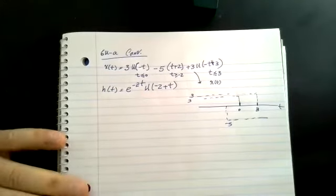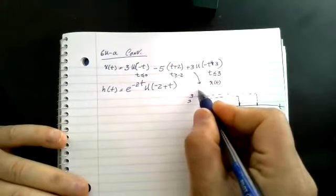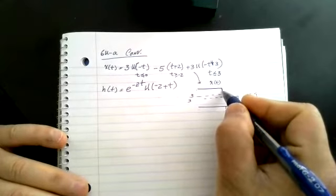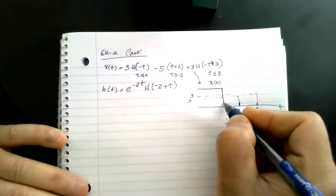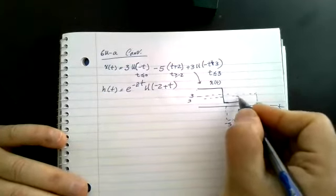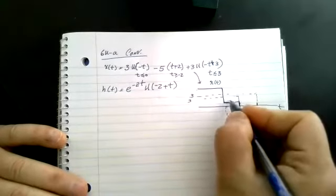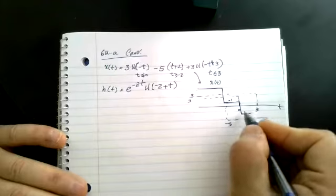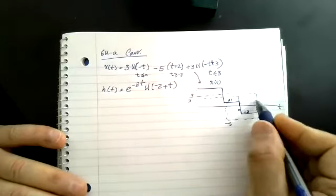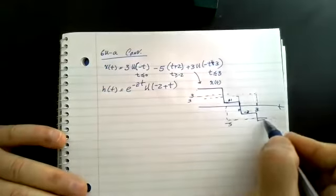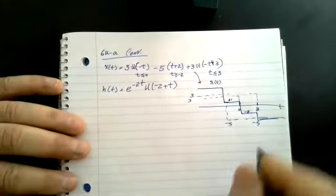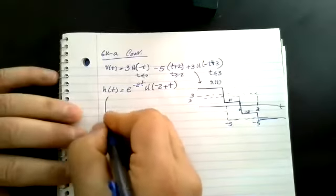So here I've got a six running all the way to minus two, where the minus five drops it down to one. At zero I lose another three so I'm at minus two. And at three I lose the last three contribution and drop down to minus five. That's my X(t) figured out.